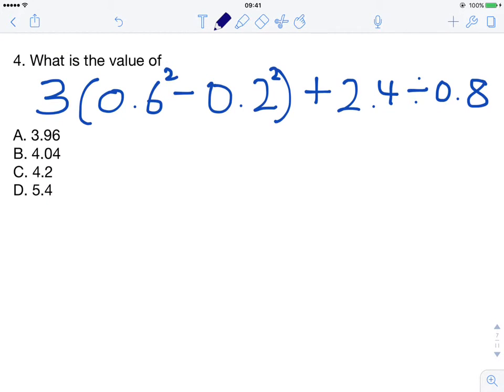This is question 4 from the 2009 KCP examination paper. The question is what is the value of 3(0.6² - 0.2²) + 2.4 ÷ 0.8.